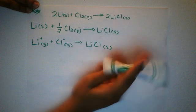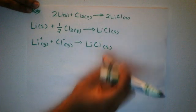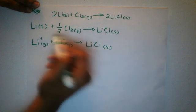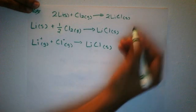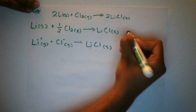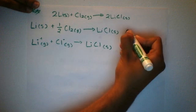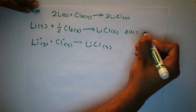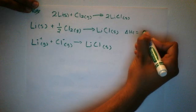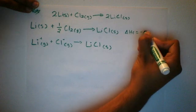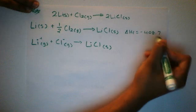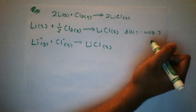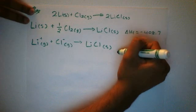The main formula we're going to use is the ionic one. They gave us the enthalpy of formation for LiCl from the first equation — delta H_f equals negative 408.7 kJ — and we're going to use that to get to the ionic equation.